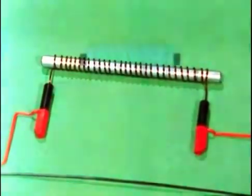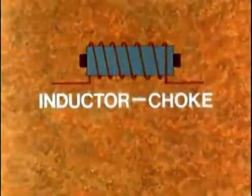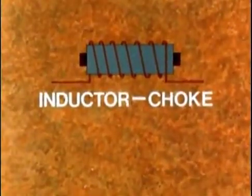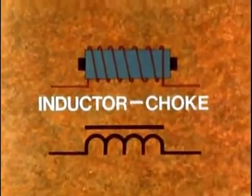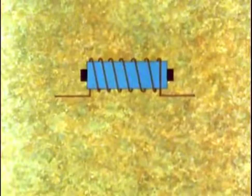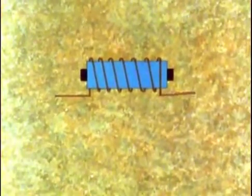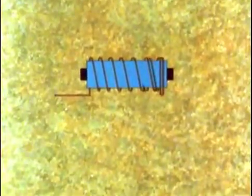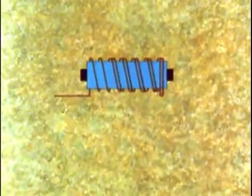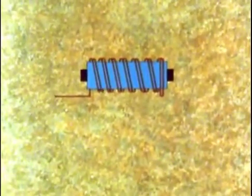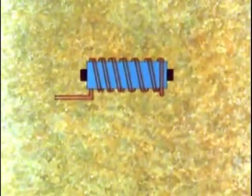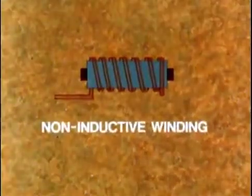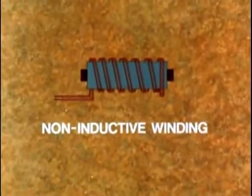Such a coil with its core is called an inductor or choke and is represented on circuit diagrams like this. If for any reason we want to avoid the inductance effect on a coil, we can double the winding back on itself so that the two induced EMFs cancel out each other. This is now called a non-inductive winding and is shown on circuit diagrams like this.